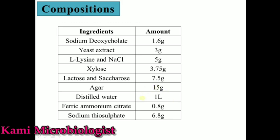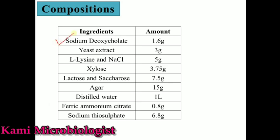Now we have the composition of this media. This media contains different types of ingredients: sodium deoxycholate 1.6 gram per liter, yeast extract 3 gram per liter, L-lysine and NaCl both needed — 5 gram NaCl and 5 gram lysine. Then we have xylose 3.75 gram per liter, lactose and sucrose both 7.5 gram each per liter, and agar 15 gram per liter.